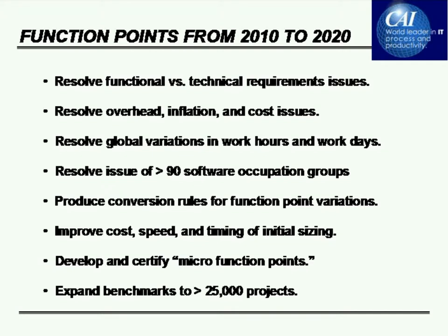For longer-range projects lasting four or five years, you need to deal with things like inflation rate. For applications developed overseas, you need to look at global variations in work hours and work days. For example, in the US we normally work 40 hours per week; in Japan it's about 44 hours, and in Canada it's about 36 hours. So you need to make adjustments when dealing with international situations.